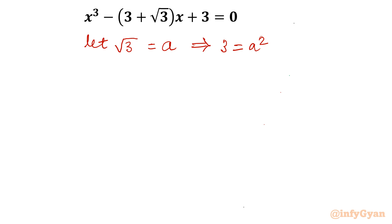Now let's see what will happen to our equation. The equation will become x³ - a² - ax + a² = 0. Now expanding: x³ - a²x - ax + a² = 0.